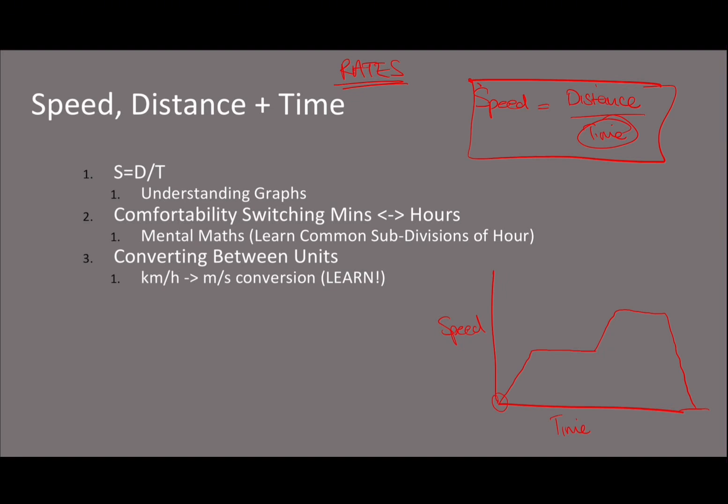A couple of important things to understand about graphs. Using our original equation, we can calculate distance by doing speed multiplied by time. Distance is also represented on this graph as the area under the curve. If I divide this into sections, to find the area of each one, just multiply the speed of that segment by the time of that segment. Students often don't realize this is the way to calculate distance when asked in questions.